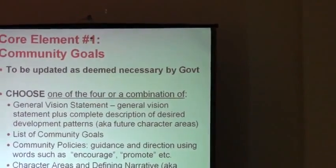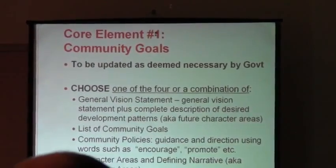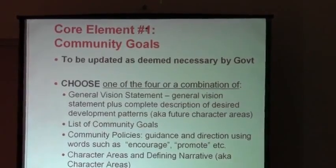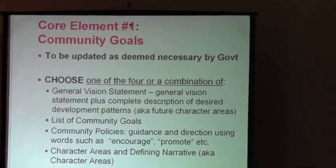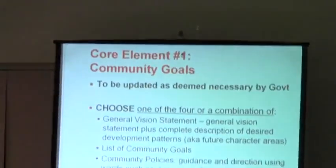So what we have to do now is look at these update dates under each element. In five years, let's say you do your comp plan update today — in five years you have to look at this element again and think: does it still fit us or does it not fit us? If it doesn't fit us, then we have to update it and make changes. If it still fits your community, then you say you don't have to update it. That's what they mean by 'to be updated as deemed necessary.' But every five years you are required to look at it.